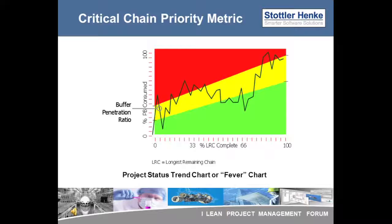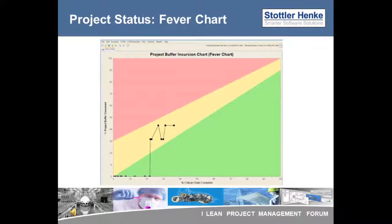The fever chart plots the percent of project buffer consumed against the percent of the total critical chain completed. One chart shows the project near its completion, with each corner showing where an update was provided. Another example of a fever chart provides a snapshot earlier in a project, where each filled-in box represents a project update. Initial critical chain tasks were completed ahead of their aggressive durations on average, then some later tasks experienced delay causing project buffer penetration. Since the overall buffer penetration is in the yellow, the project is in good shape. However, the trend matters: when the trend is more vertical, it may be a cause for concern, and the rate of buffer consumption would warrant further investigation.